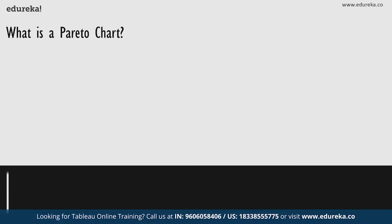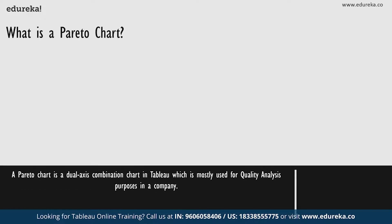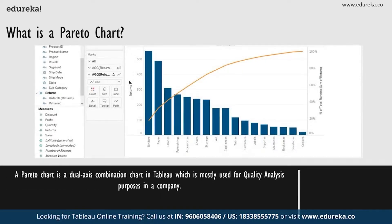So what is a Pareto chart? A Pareto chart is basically a dual axis combination chart in Tableau. On its primary axis, bars are used to show basic raw quantities for each dimension, usually sorted in descending order. On a secondary axis, a line graph is used to show the cumulative total in a running percentage format. This chart type is most known for being part of the seven basic tools of quality control, where it majorly dominates.